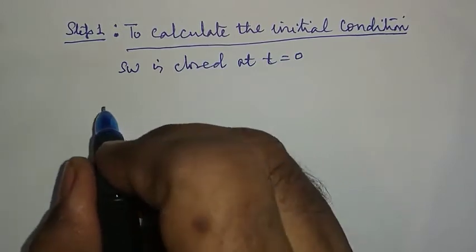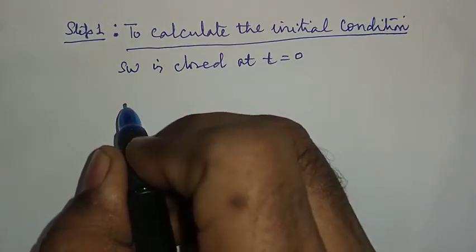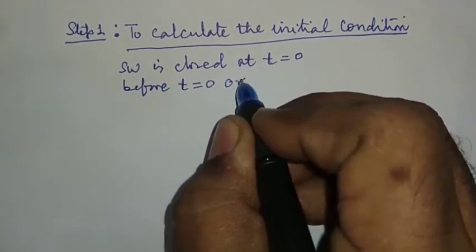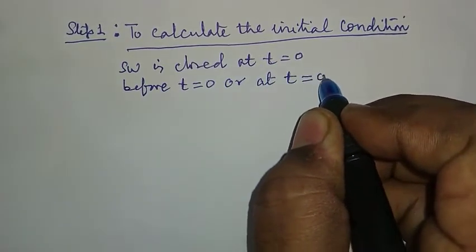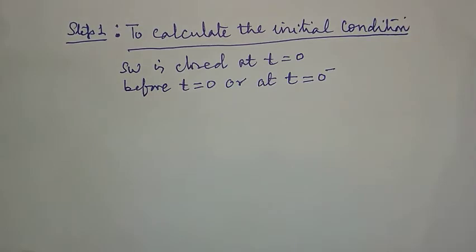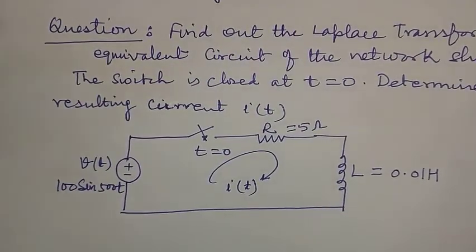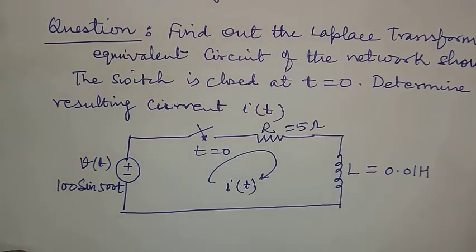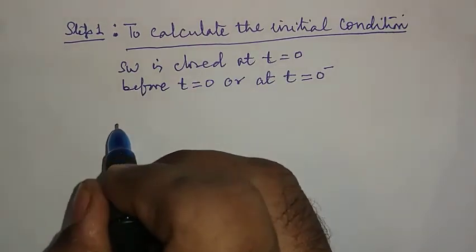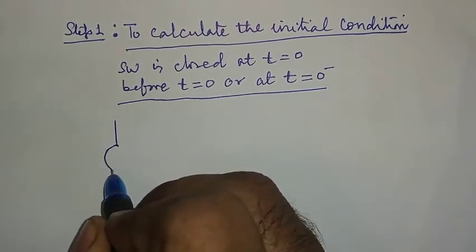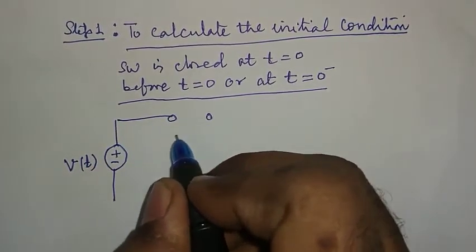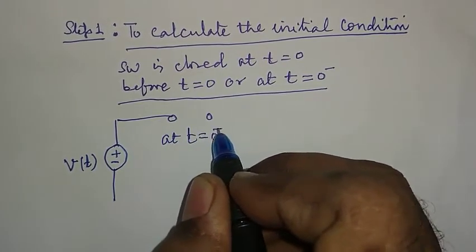To calculate the initial condition, we must see what is the condition of the switch before t equal to 0, which is also represented by t equal to 0 minus. Since the switch is closed at t equal to 0, before t equal to 0 minus, the switch will certainly be open.